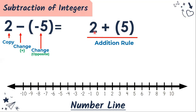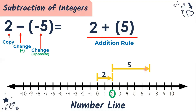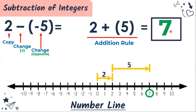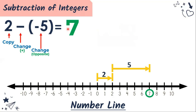Since our first number is positive, we're going to use a yellow arrow. Let's start at zero — two units to your right. Plus five: again we use a yellow arrow, five units to your right. We have seven. So two plus five is equal to seven, which means two minus negative five is equal to seven.